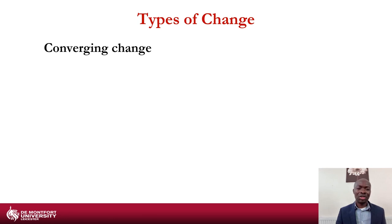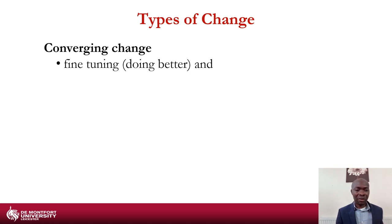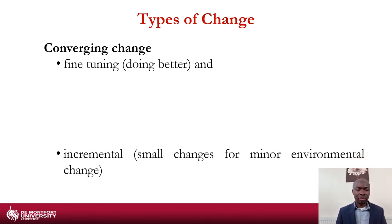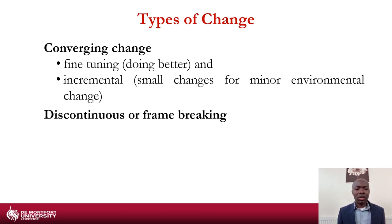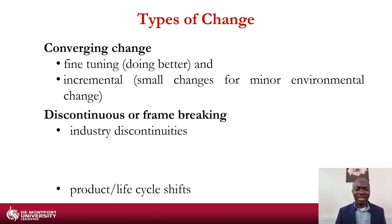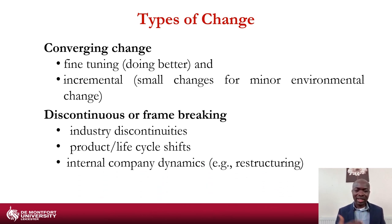There are different types of change in the literature. There is converging change — looking at fine-tuning and doing better. There is incremental change — small adjustments for minor environmental change. And there is discontinuous or frame-breaking change — where industry discontinuities occur, product life cycles may shift, or internal company dynamics lead to restructuring. This is classified as a discontinuous type of change.